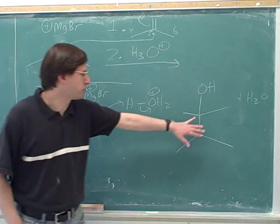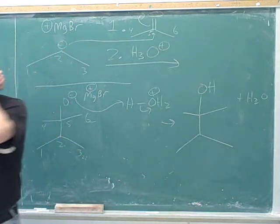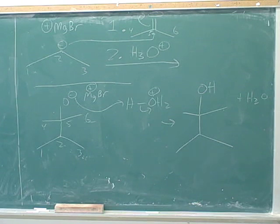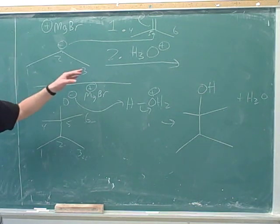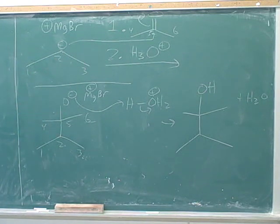And what type of functional group did we produce? We eventually ended up with an alcohol after the protonation. So if you think back to the example we did before this — we did a Grignard plus an aldehyde, and we saw that gives you an alcohol. Well, now we're doing a Grignard plus a ketone, and we can see that also gives you an alcohol.